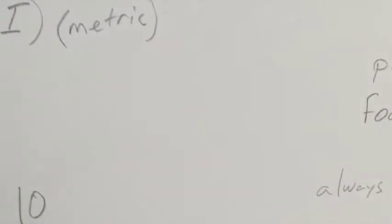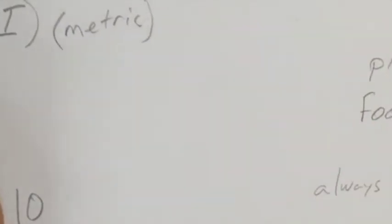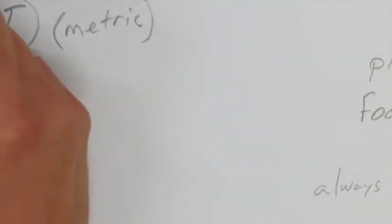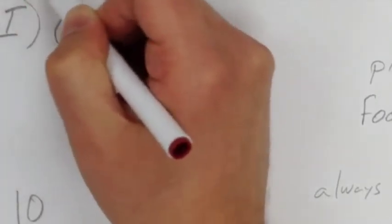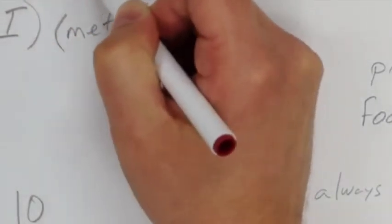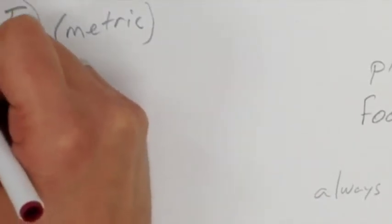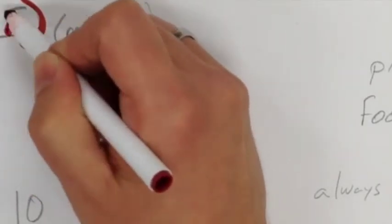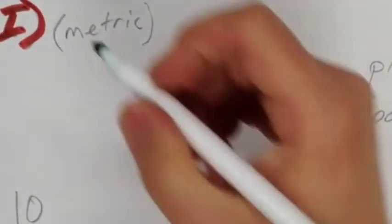The first system of measurement is the standard one around the world. It is called the Sistema Internationale de Unity — we call it SI for short. Another term used for it is the metric system, because one of its main base units is the metre.